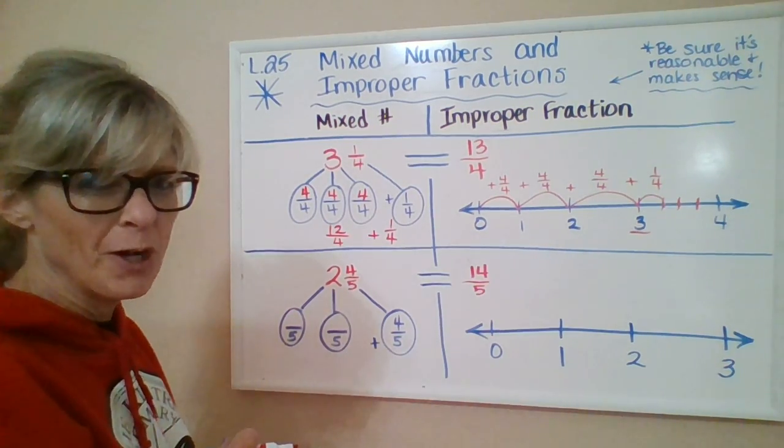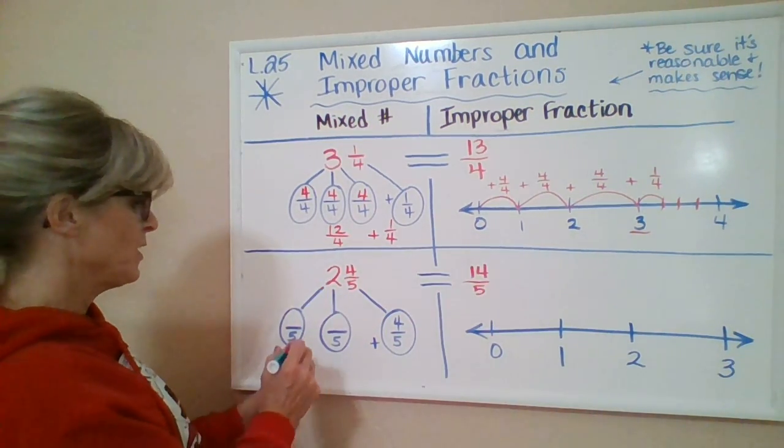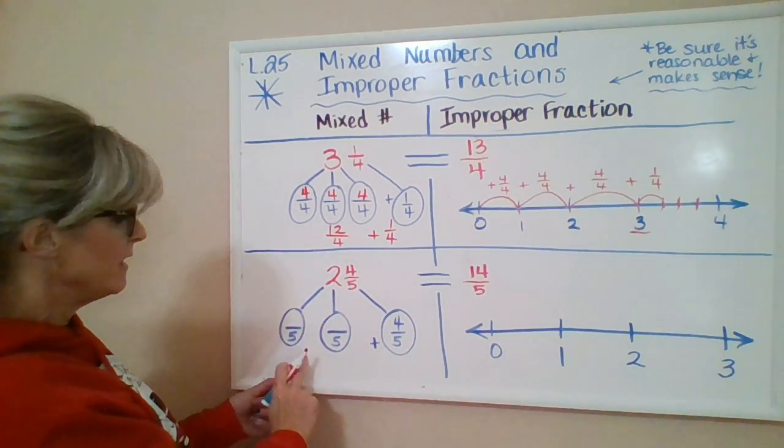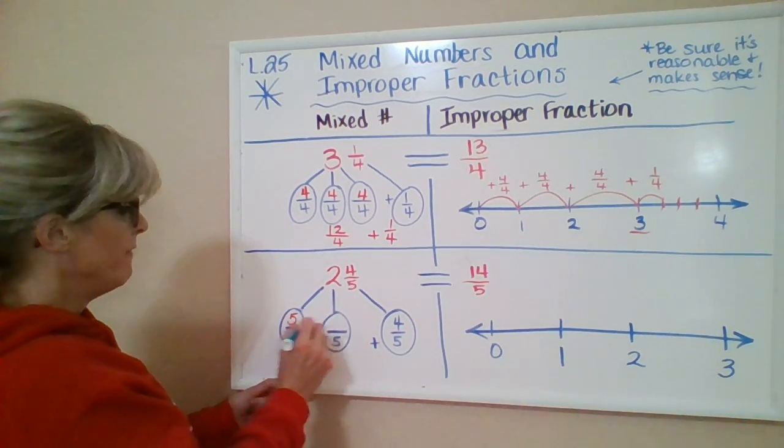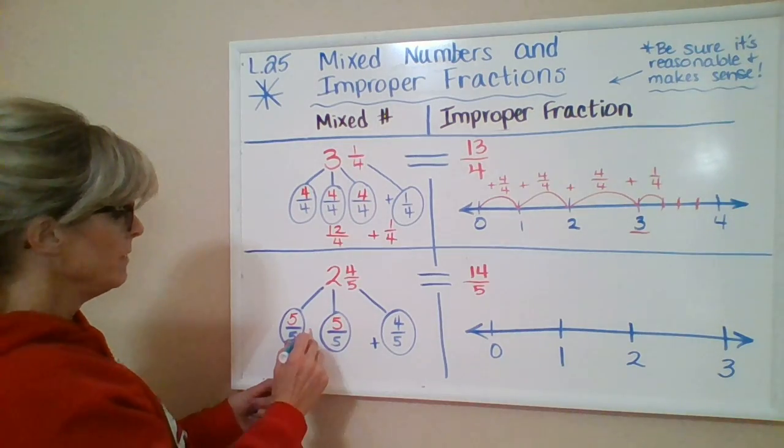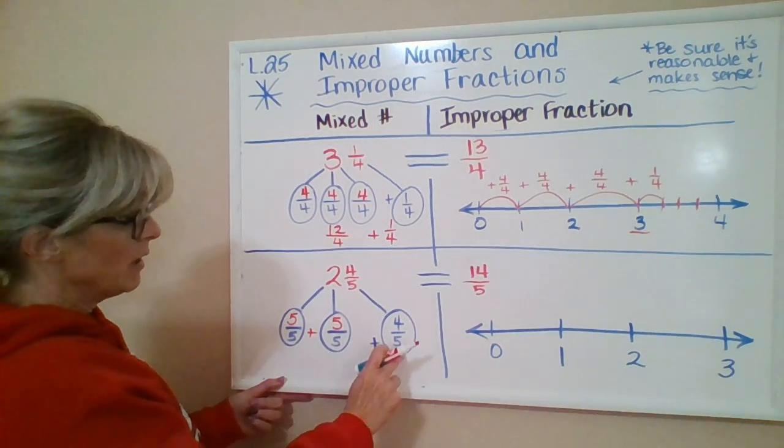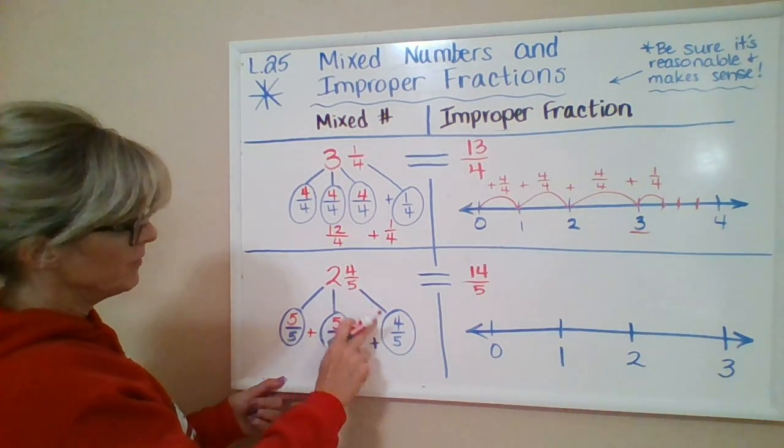Okay, ready to keep going. I'm going to go ahead and show you how two would look using fifths. We have five fifths plus five fifths, and then we still have that four fifths which comes from the mixed number over here.